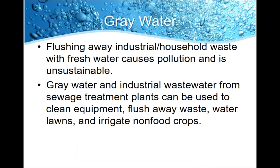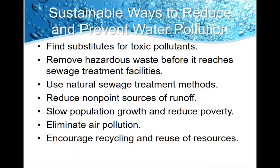Flushing away industrial and household waste with fresh water causes pollution and is unsustainable. Gray water and industrial wastewater from sewage treatment plants can be used to clean equipment, flush away waste, water lawns, and irrigate non-food crops. We need to find substitutes for toxic pollutants — if you can find something that does almost as good a job but is non-toxic, please think about switching. Remove hazardous waste before it reaches sewage treatment plants, use natural sewage treatment methods, reduce non-point sources of runoff especially from agriculture, slow population growth, eliminate air pollution, and encourage recycling and reuse of resources.